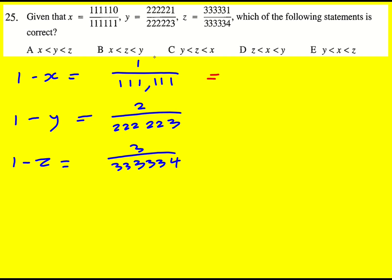So that's times this by top and bottom by 6. The common numerator in this case is going to be 6, so it's 6 over 666,666. This one here, very similar, but it's going to be times it through by 3, 666,669. And here, I'm going to be times in through by 2, 666,668.